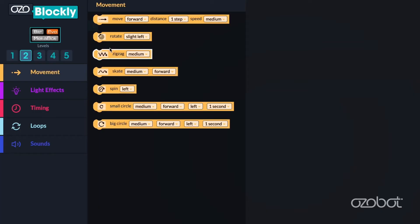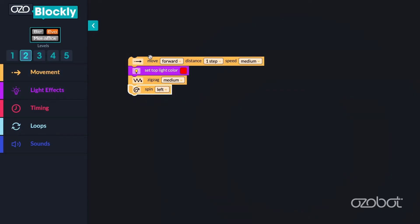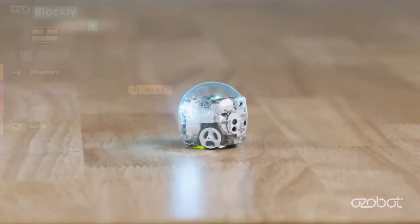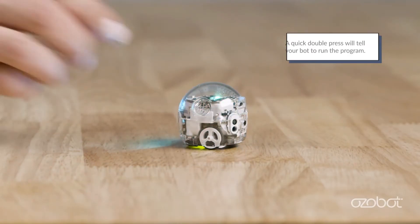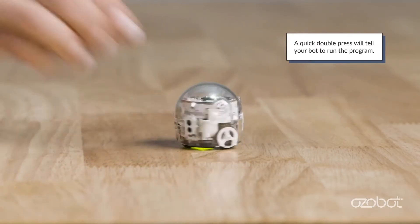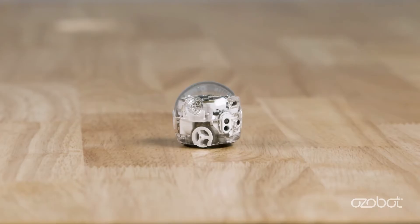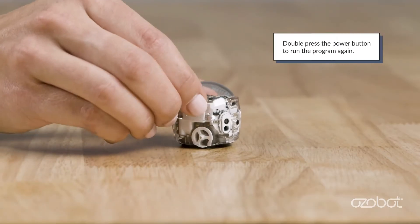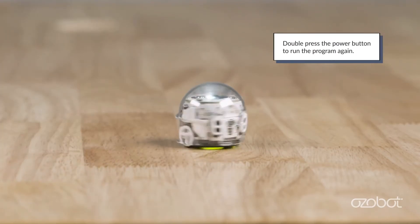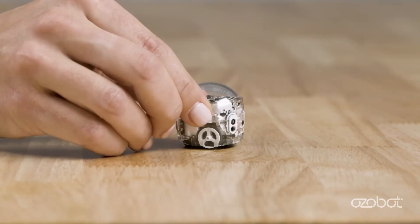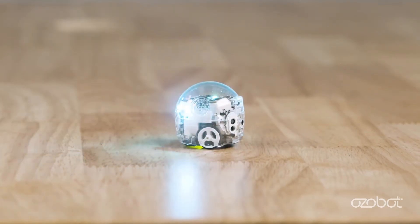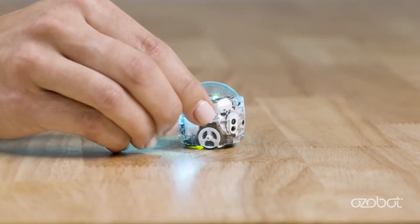Another function of the power button is to run programs that are flash-loaded from Ozobot Blockly. Ozobot Blockly is the web-based block coding editor that you can use to program your Ozobot. After the program has been loaded, a quick double press will tell your bot to run the program. Once the program has been completed, you can double press the power button to run the program again. Press the power button quickly one time to turn your bot on, then press the power button one time again to turn your bot off.